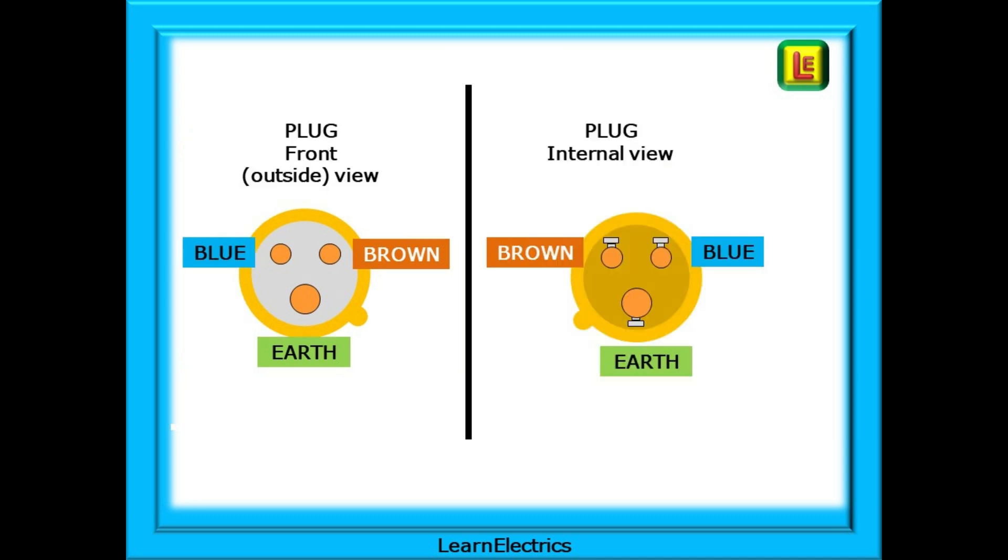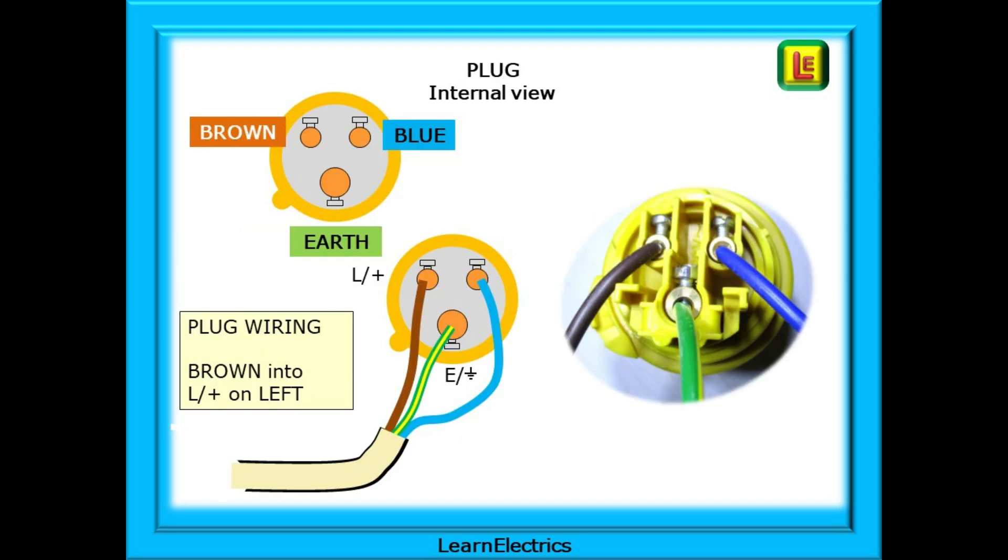Going back to the yellow plugs, remember that when the plug is opened and then looked at from the cable side, everything is the opposite way round. And this is where the conductors should go in a correctly wired plug. The green and yellow CPC or circuit protective conductor goes into the terminal marked E or with an earth symbol, and the brown into L plus on the left. The blue conductor goes into the only empty terminal on the right.